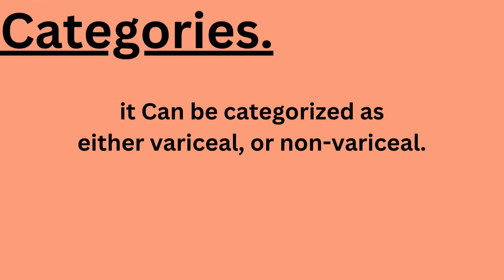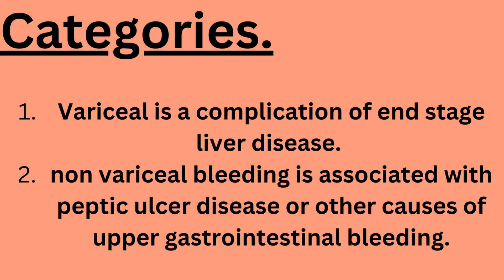Categories. It can be categorized as either variceal or non-variceal. Variceal bleeding is a complication of end-stage liver disease, while non-variceal bleeding is associated with peptic ulcer disease or other causes of upper gastrointestinal bleeding.